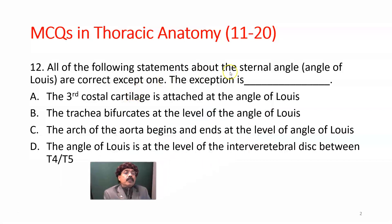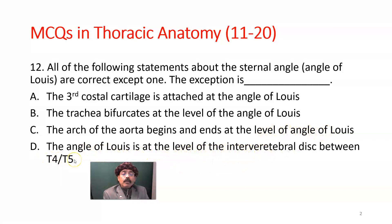Question number 12. All of the following statements about the sternal angle, angle of Louis, are correct except one. The exception is what? Third costal cartilage is attached at the angle of Louis. The trachea bifurcates at the level of the angle of Louis. Arch of the aorta begins and ends at the level of the angle of Louis. The angle of Louis is at the level of the intervertebral disk between T4 and T5. The exception is that it should be the second costal cartilage attached to the angle of Louis — not the third. So that statement is wrong and is the answer.